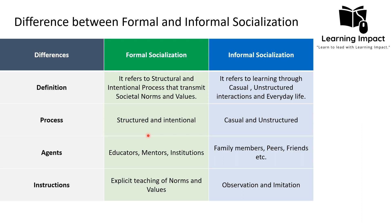Regarding the process: formal socialization is a structural and intentional process based on rules and regulations, a formal setting, and a regulated environment. Informal socialization, on the other hand, is based on a casual and unstructured setting and an informal environment. For example, children learn about respecting elders by observing how family members engage in conversation — this is an everyday, unstructured observation and is a process of informal socialization.